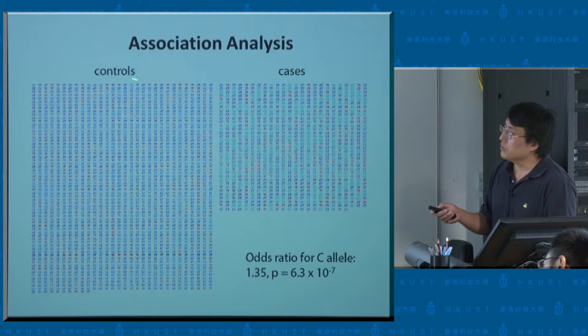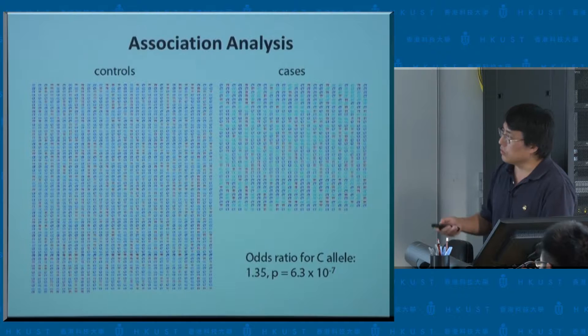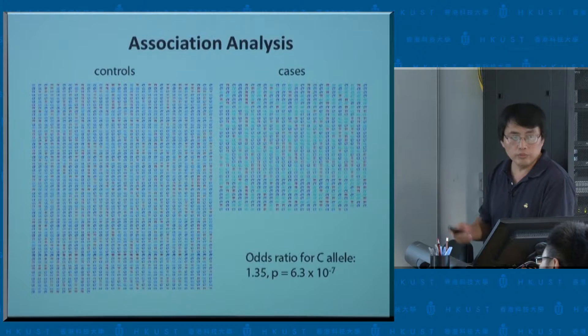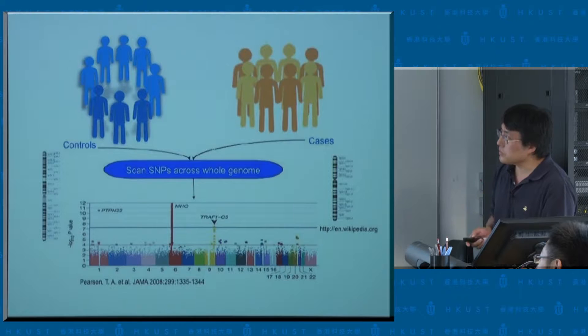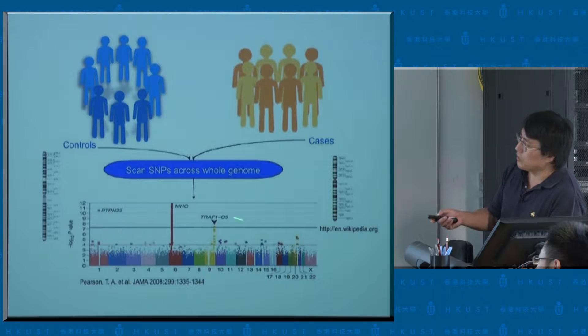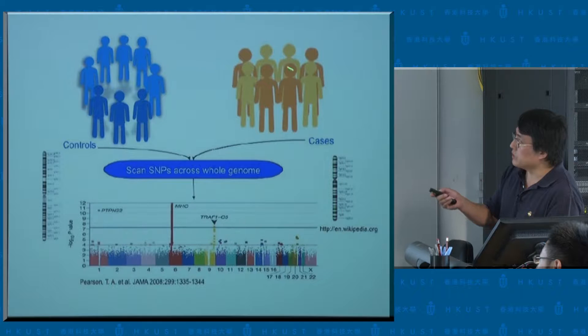You do this five million times, then tally up all results showing the strongest evidence of association based on p-value. You rank them from one to five million. This typical output for a genome-wide association study is called a Manhattan plot — some people call it the Dubai plot depending on how many peaks you have. You order the markers from chromosome one, two, three, et cetera on the x-axis, and minus log10 p-value on the y-axis.